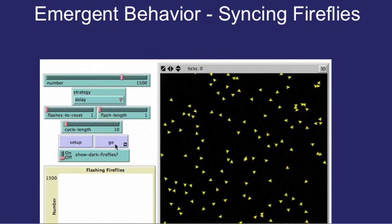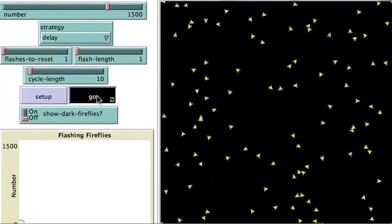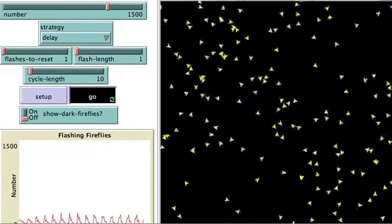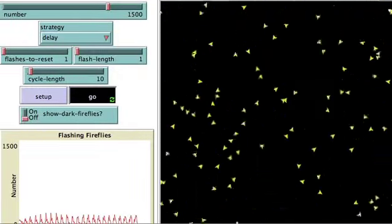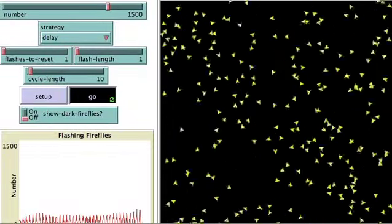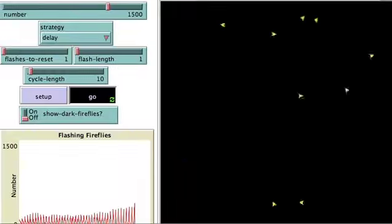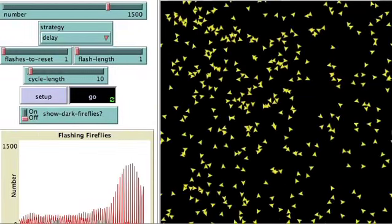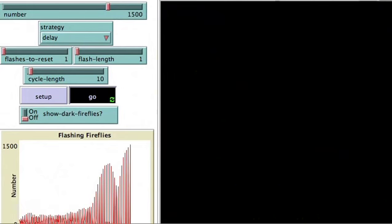NetLogo is particularly suited for watching emergent behavior. This model shows how a population of fireflies can synchronize their flashes using only information from individual fireflies. Similar behavior governs the beating of our hearts. The mathematics behind how synchrony can spontaneously break out in a complex mathematical system is very complicated, requires non-linear dynamics, but students can easily explore such a model and perhaps get excited about mathematics.